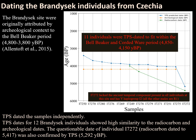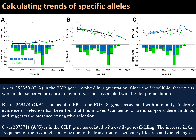We then turned to TPS to resolve the age question of the Brandisk individual from Czechia. One of these individuals was radiocarbon dated to be much older than the other individuals, and the question was: could it be correct? We TPS dated all the individuals independently of the others and confirmed that they all belong to the same culture, with the exception of individual I7272, who is indeed much older than all the other individuals. These results made sense: this individual lacked one of the ancient components common to all individuals at that site, and their haplogroup was I2, whereas all the other males had R1.